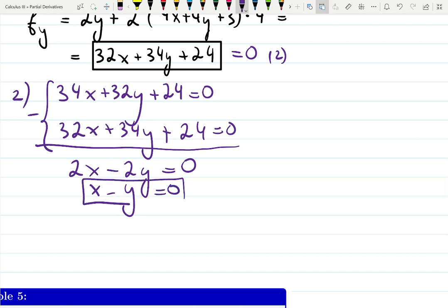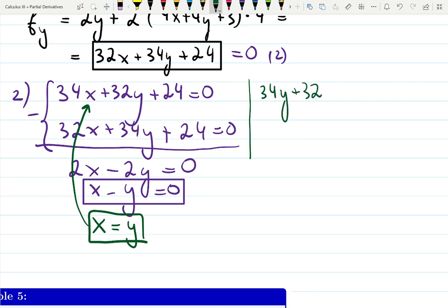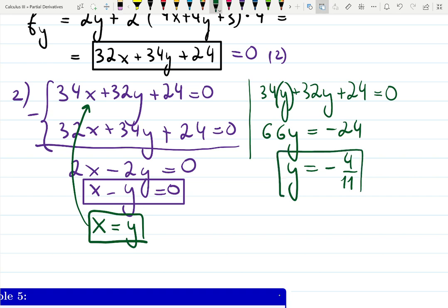Now I can do the substitution method. x equals y, and you plug into any equation you like, for example equation number 1. Then it will give me 34y plus 32y plus 24 equals 0. 34 plus 32 is 66y equals negative 24, so y equals -24 over 66, which simplifies to -4 over 11.